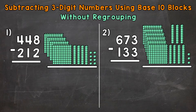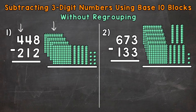Let's jump into number one where we have 448 minus 212. We are starting with 448 and we are subtracting or taking away 212. To the right of the problem we have 448 represented by base 10 blocks. 448 has a 4 in the hundreds place, so here are our 400s, a 4 in the tens place, so here are our 4 tens, and then an 8 in the ones place, so here are our 8 ones.